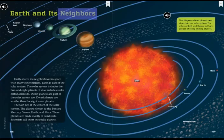Earth and its neighbors. Earth shares its neighborhood in space with many other planets. Earth is part of the solar system. The solar system includes the sun and eight planets. It also includes rocks called asteroids. Dwarf planets are part of the solar system too. Dwarf planets are smaller than the eight main planets. What do the details all have in common in this first paragraph? So by looking at what these details have in common, I can determine that the main idea is that the solar system is home to many planets, asteroids, and even the sun.